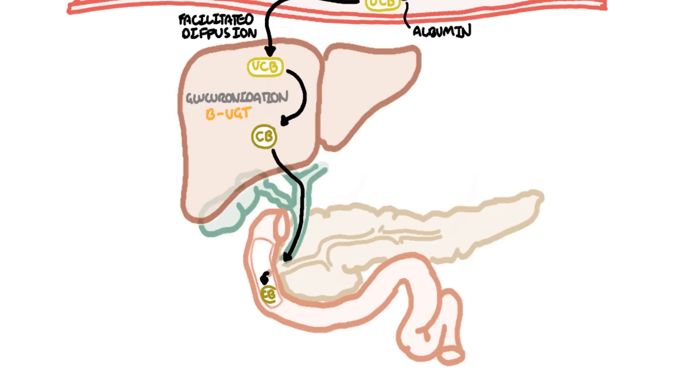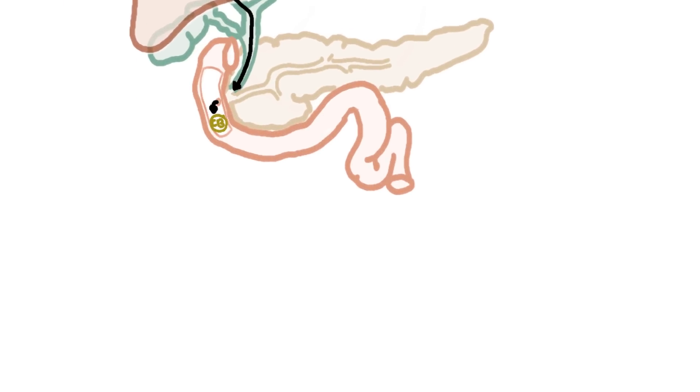Conjugated bilirubin travels down the bile duct where it joins with the pancreatic duct and into the duodenum through the ampulla of vater. The conjugated bilirubin is now in the small intestine where it continues its journey. Majority of bilirubin here is conjugated, 98%, and only a small proportion is unconjugated.